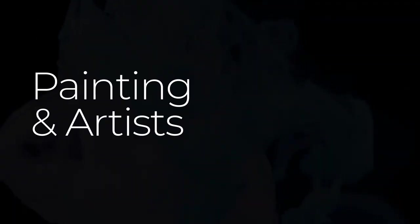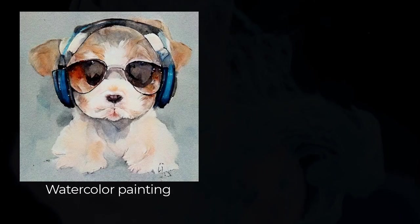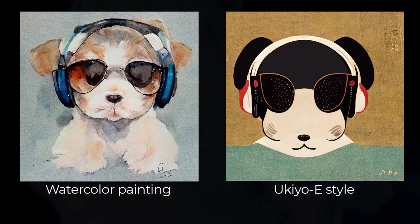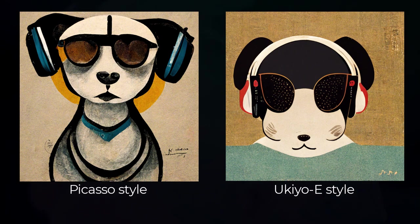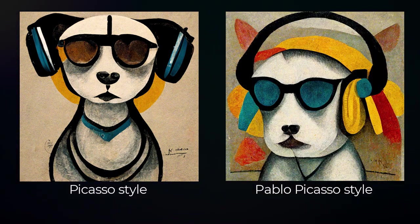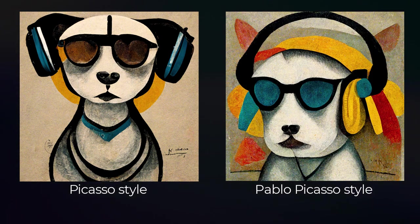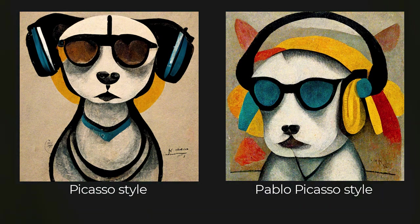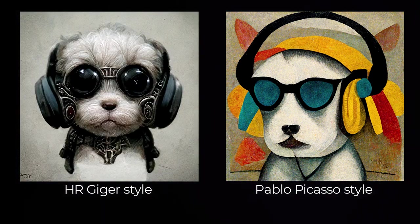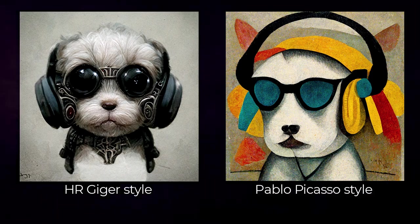Now we'll explore a few different painting styles and artists. You can use watercolor to get a watercolor look, or 'Yuki Yoi' which is more of a Japanese style. You can also choose artists like Picasso — or even if you type in 'Pablo Picasso' you actually get different results because the text string is different. Another popular choice is HR Giger if you're looking for something really different, or Van Gogh to get that signature look.